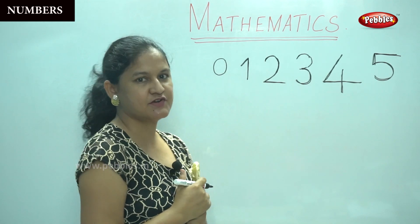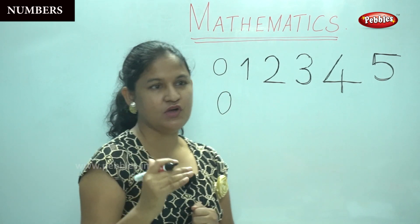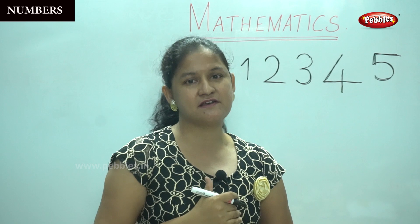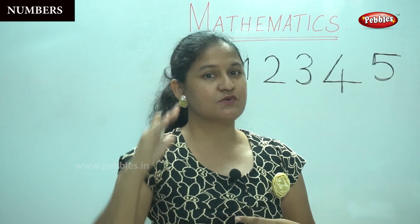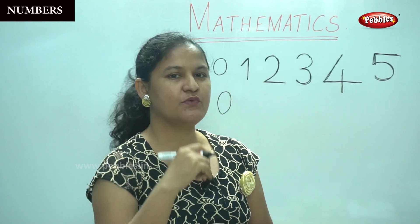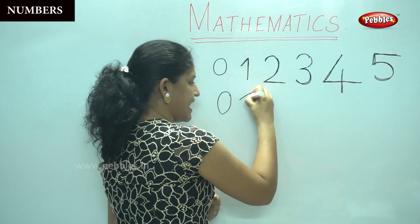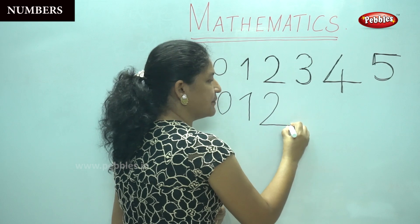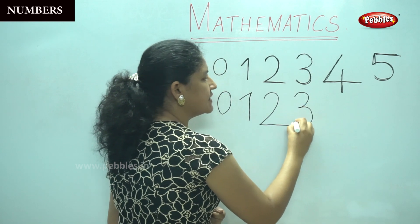So we will start from number 0. Zero is the wheels of the bus. Whenever I say 0, you should always remember the wheels of the bus, because the wheels of the bus go round and round. You can even sing the rhyme — the wheels of the bus goes round and round. When you sing it, you will be able to write 0 easily. So we will go to the next number. Number 1 is a slanting line and a straight line. Number 2, a curved line and a sleeping line. Number 3, a curve and another curve.